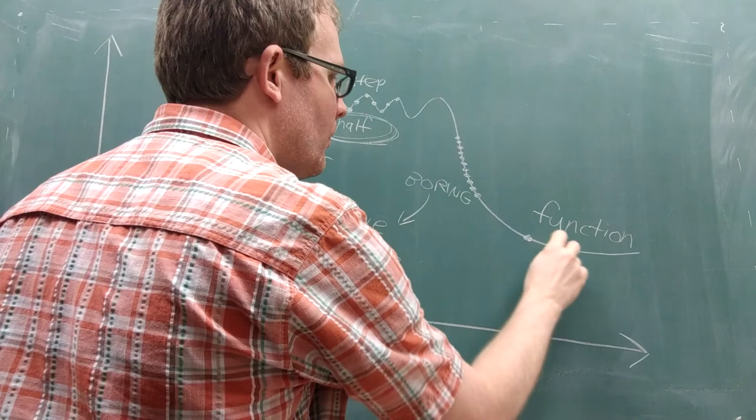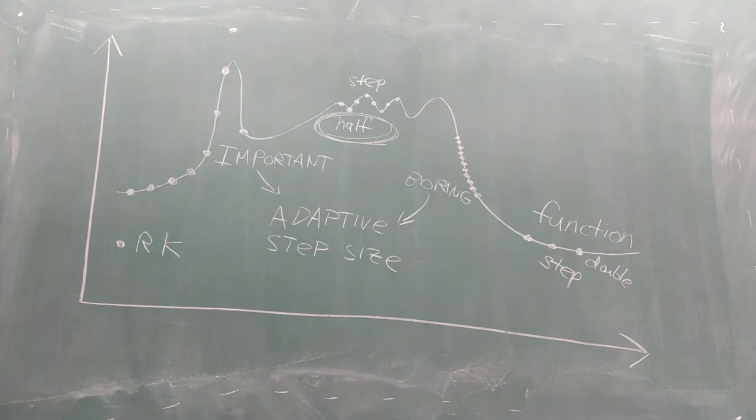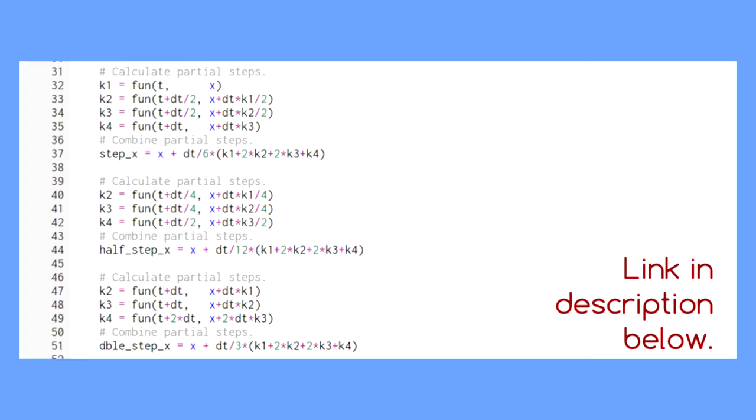If not, we check to see if taking a step of double the size would result in a significant difference. If it doesn't, like in a relatively flat region, we double the step size and start to move along the solution more quickly.